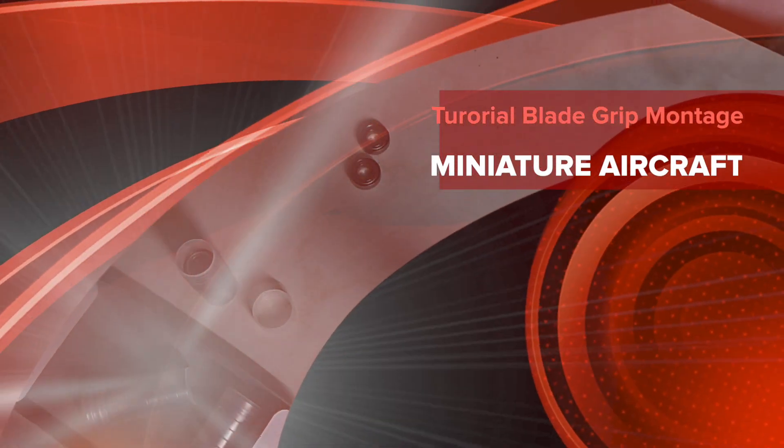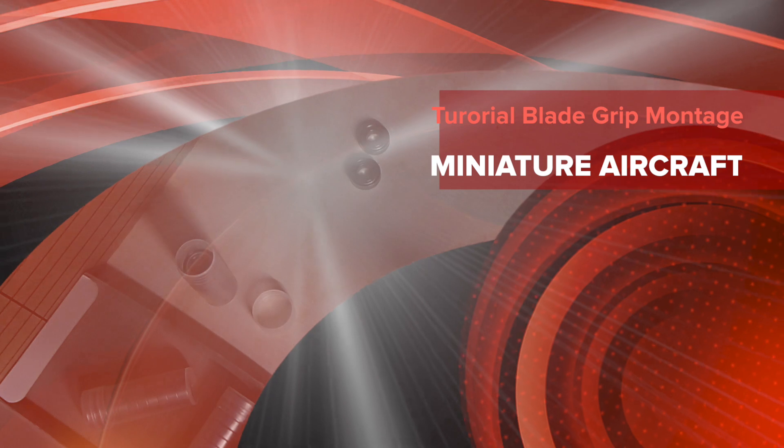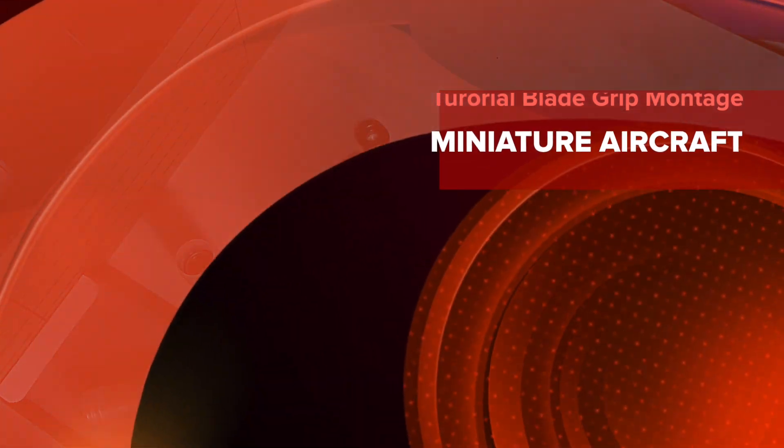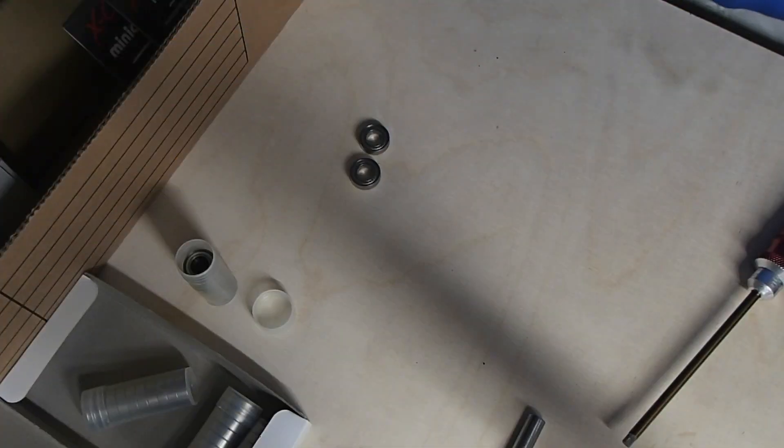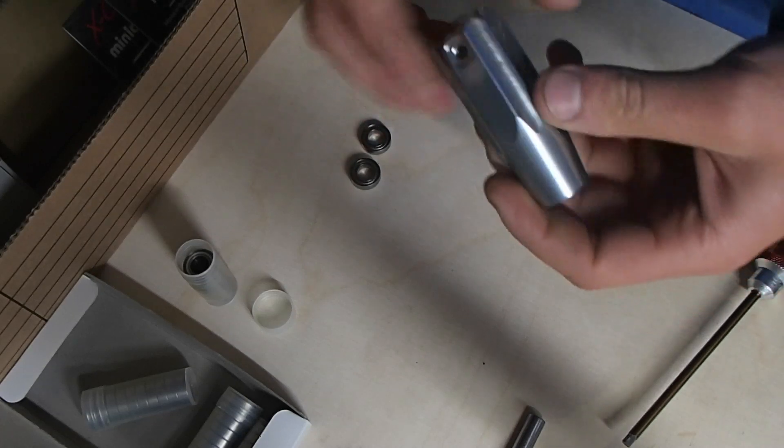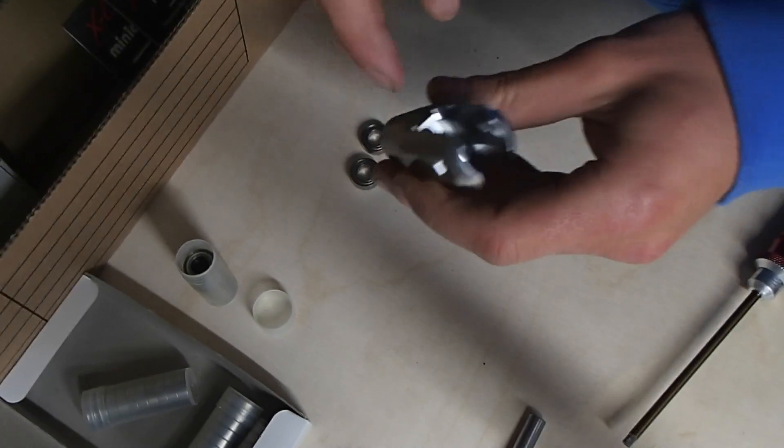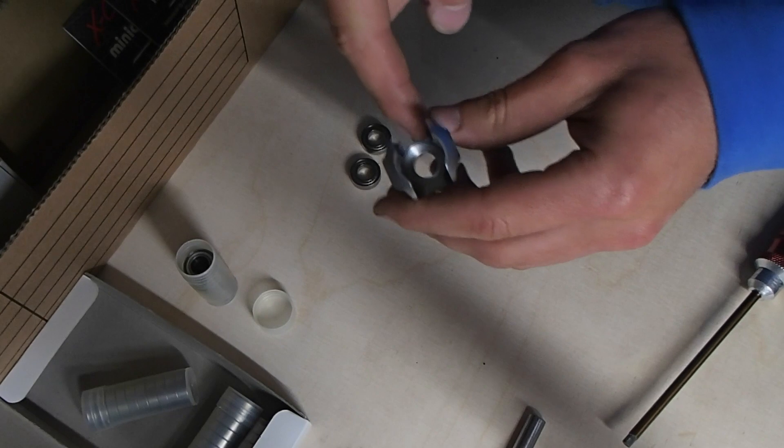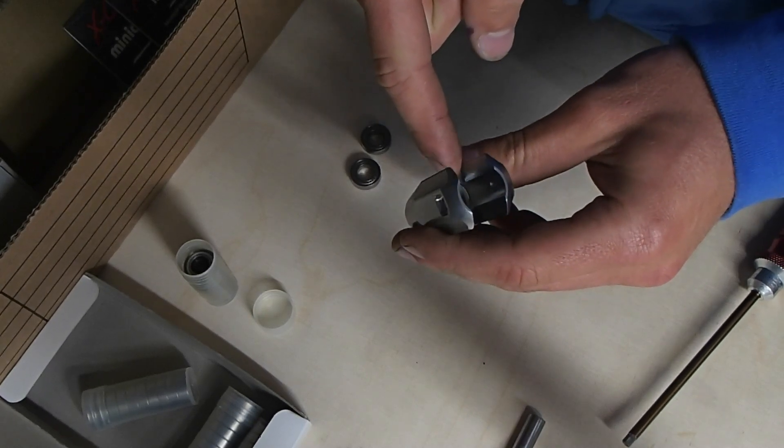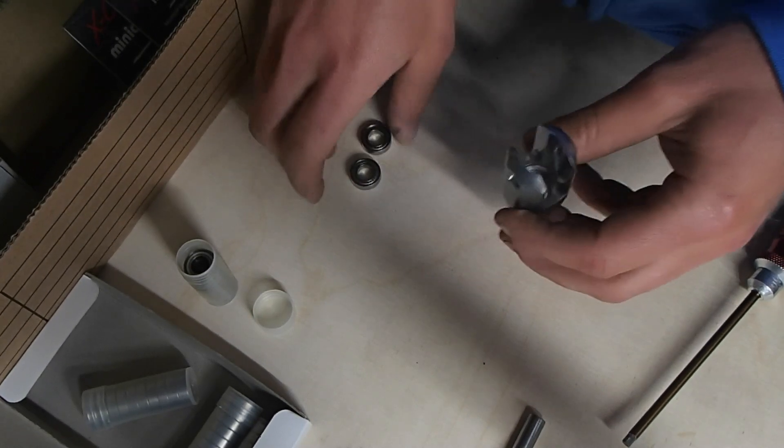Okay, hello, this is Devin Connors with Miniature Aircraft USA. I believe it is, let's see, Germany time is 4:18 in the morning - perfect time for a tutorial. So these new blade grips have a little nub on the inside, so some people may find it difficult to get their thrust bearings in, and there's a reason for that.